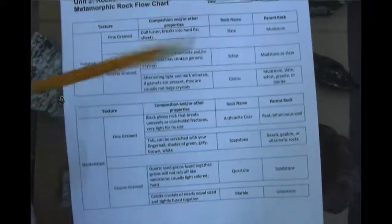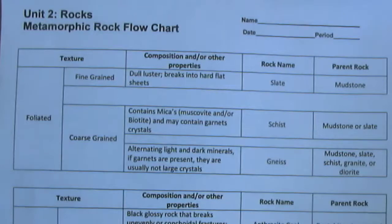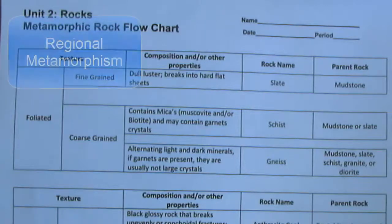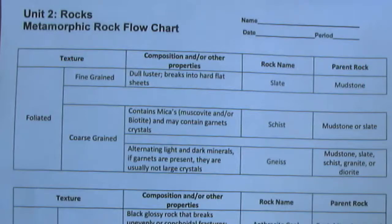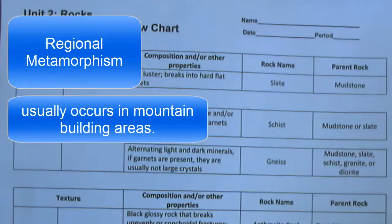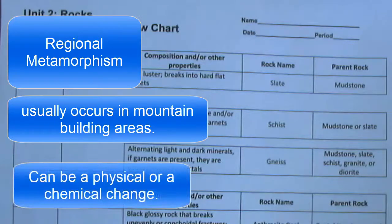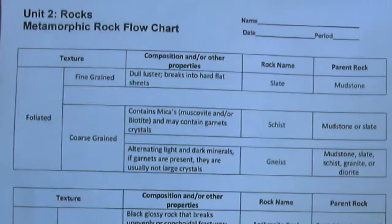Foliated and non-foliated describe somewhat the process and how the rock formed. There are two ways a rock can undergo metamorphosis: regional metamorphosis or contact metamorphosis. Regional metamorphosis happens over a large area when intense pressure and heat from being buried causes a rock to change — either its shape or causing minerals to recrystallize into new types. Rocks with a foliated texture are usually the result of regional metamorphosis, with intense pressures causing minerals to re-align perpendicular to the pressure.